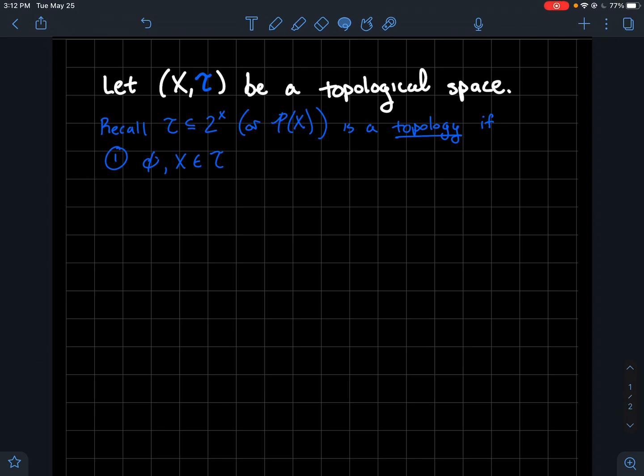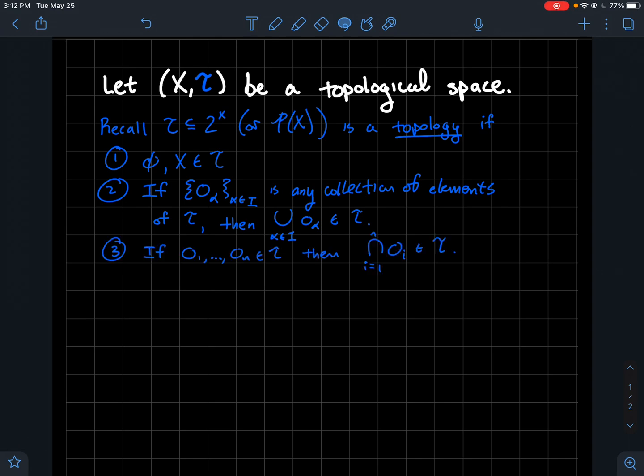So the empty set and X have to be included in T. Number two, if you had any collection of things in T, then the union of those things also has to be in T. And if you had finitely many elements of T, so if you're given a handful of subsets of X, then the intersection of those also has to be in T as well. So these are the axioms for a topology.